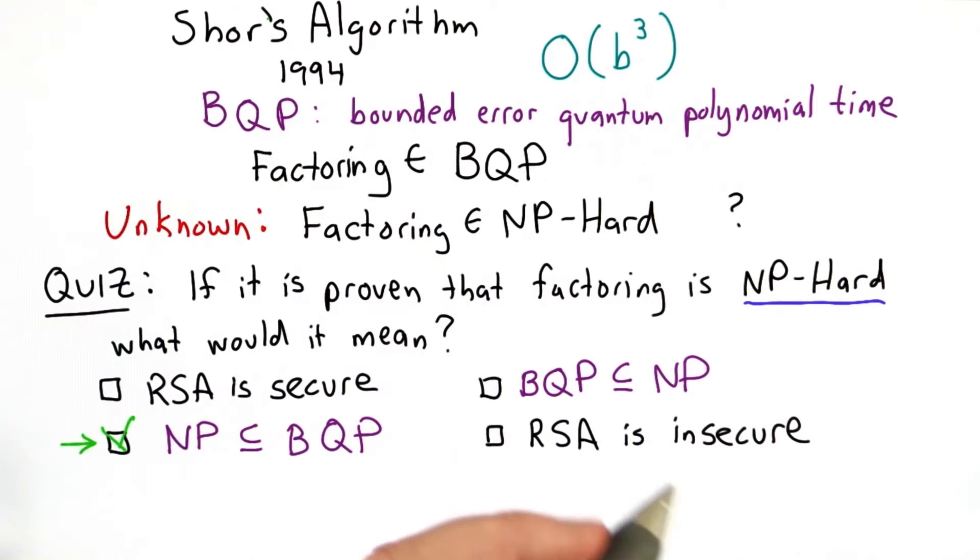In fact, we know because of Shor's algorithm, if someone can build a sufficiently large quantum computer, they would be able to break RSA.